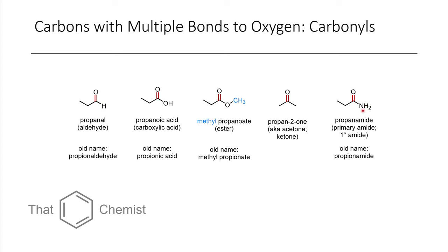Here we have paracetamol — in North America usually known as Tylenol or acetaminophen. This is a relatively straightforward molecule because it only has two functional groups: an amide group and an alcohol group. Because this alcohol is connected to a benzene ring, we call it a phenol. You can also see a benzene ring in the structure.